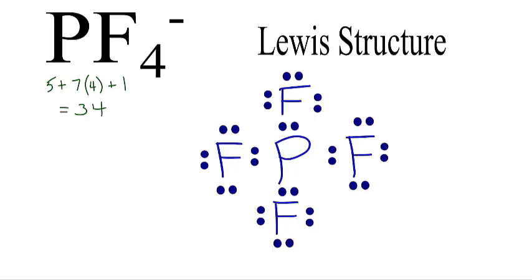However, there's a problem here. We've only used 32 valence electrons. We have a total of 34 valence electrons. So we have two extra valence electrons that we have to put somewhere.